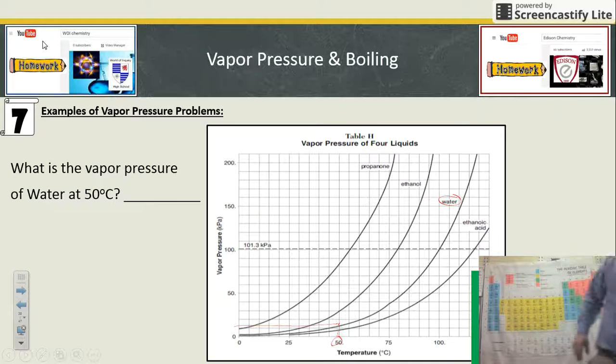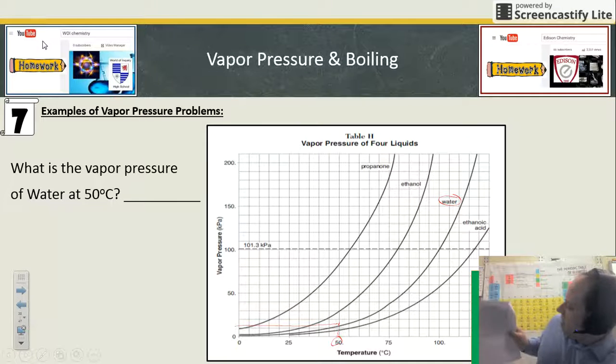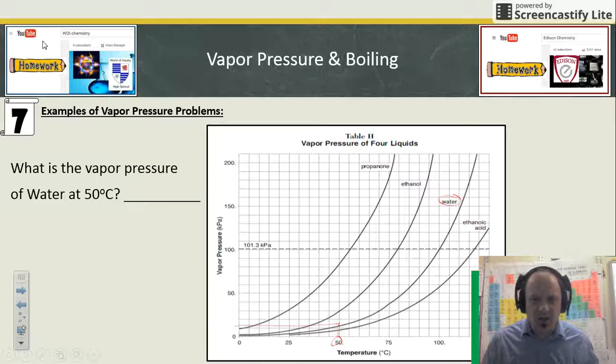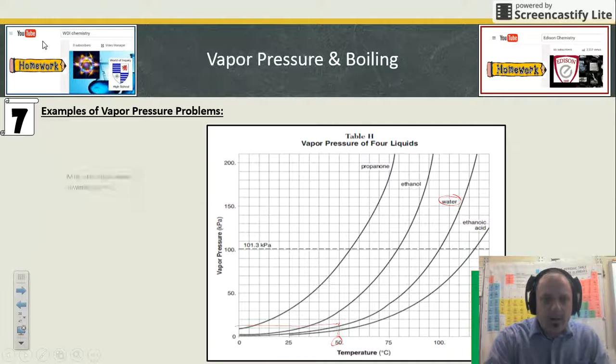Then you read over, and for me on this chart, it looks to be—using my close-up version of it—about 12 to 15 kilopascals. That's what you'd write on the line: 12 to 15 kilopascals.